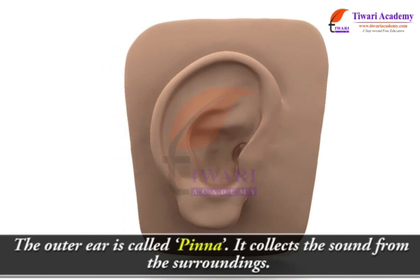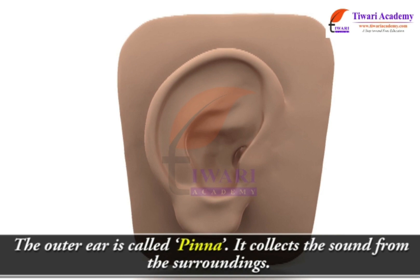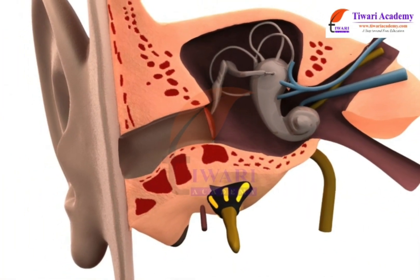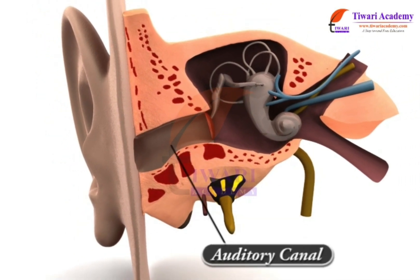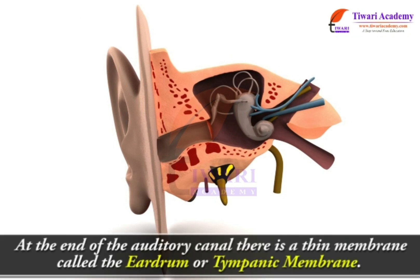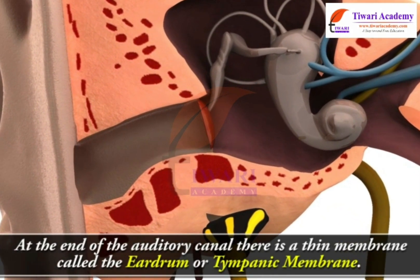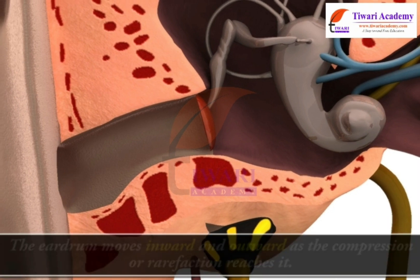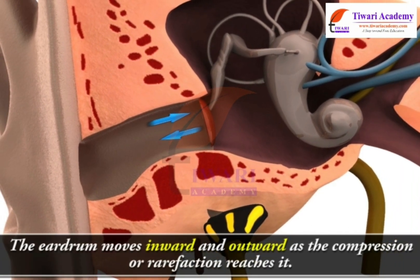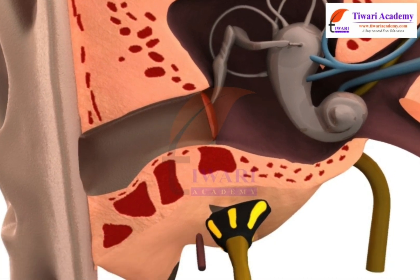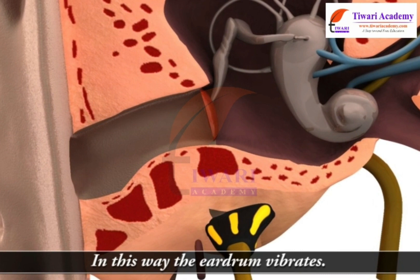The outer ear is called the pinna — it collects sound from the surroundings. The collected sound passes through the auditory canal. At the end of the auditory canal, there is a thin membrane called the eardrum or tympanic membrane. The eardrum moves inward and outward as compressions and rarefactions reach it, causing it to vibrate.